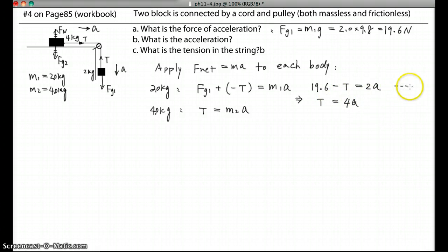To solve this system of equations, I label equation 1 for this one, 2 for this. Then you can add equations 1 plus 2. When you're adding two equations, the left side adds to the left side, so you can get 19.6 left because you cancel the negative and positive T. On the right side, 2A plus 4A, you get 6A.